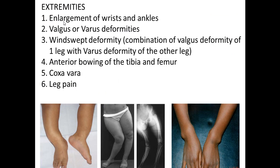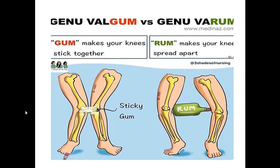In the extremities, there is enlargement of the wrist and ankle, and valgus or varus deformity. Wind-swept deformity is a combination of valgus deformity of one leg and varus deformity of the other leg. There is anterior bowing of the tibia and femur, coxa vara, and leg pain. Genu valgum is approximation of the knee joints — knock knee. Genu varum shows wide displacement between the two knee joints — bow legs.